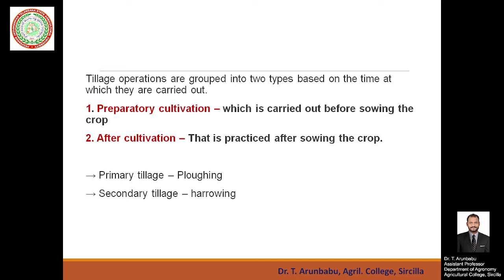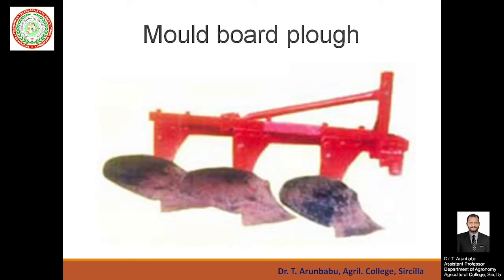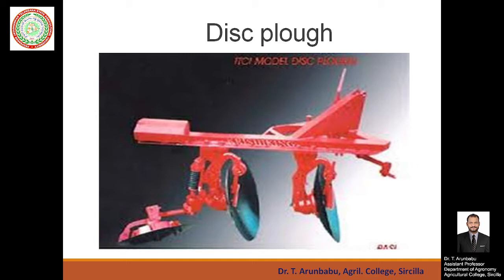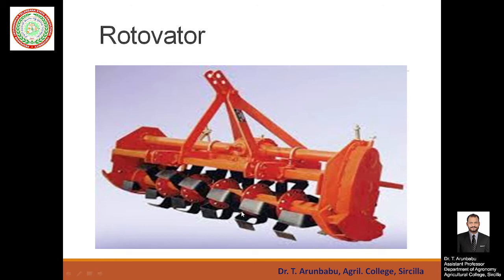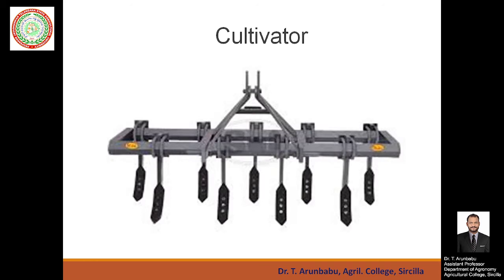Generally, primary tillage can be called plowing and secondary tillage can be called harrowing. The moldboard plow performs four operations at a time: cutting, lifting, turning, and pulverizing the soil. The disc plow uses concave-shaped discs instead of shares to cut, break, and push soil sideways. The rotavator uses different blades to cut and pulverize the soil, and cultivators are also used for tillage and cutting operations.